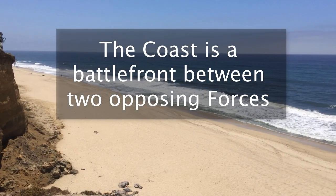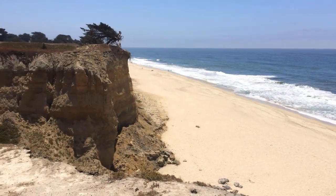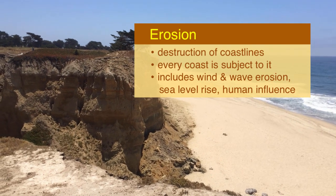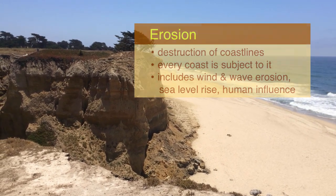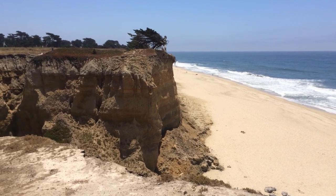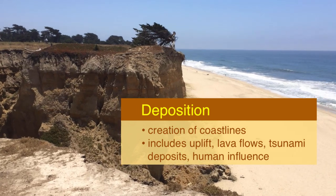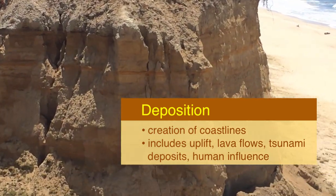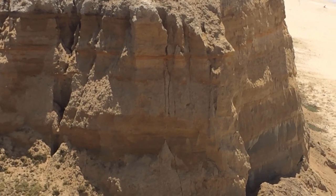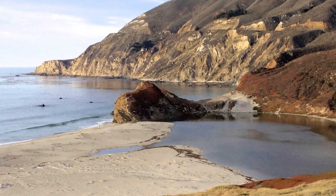The shoreline is a really dynamic place. You can think of it as a battle between deposition and erosion, where erosion will be destroying the coast either through waves or wind, sea level rise, or human interference. Deposition on the other hand will be creating new coast through earthquake uplift, lava flows, river deposits, tsunami deposits, or even human influence as well. So let's take a look at some of the things that are reflected by a high or low energy coast.